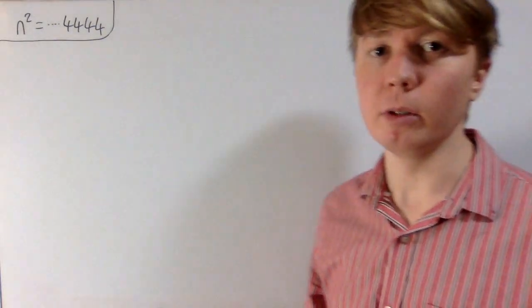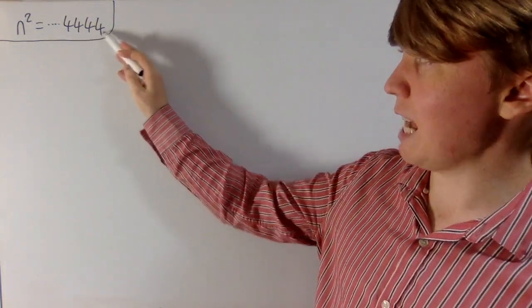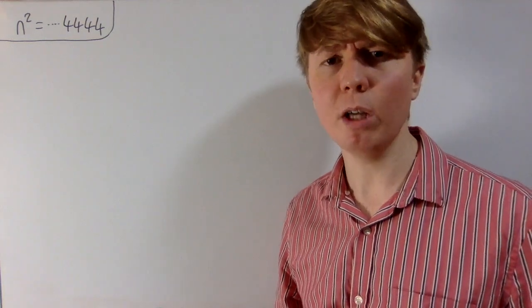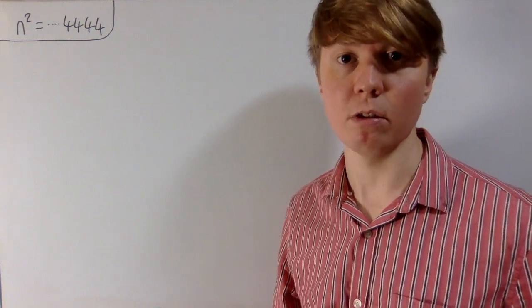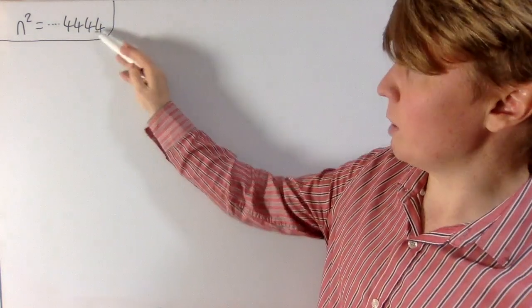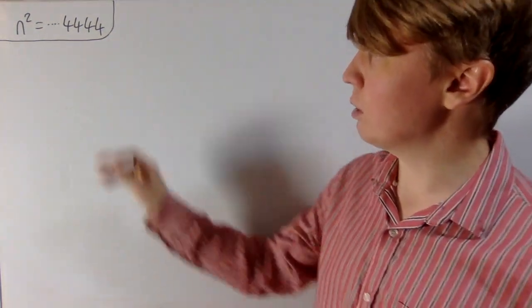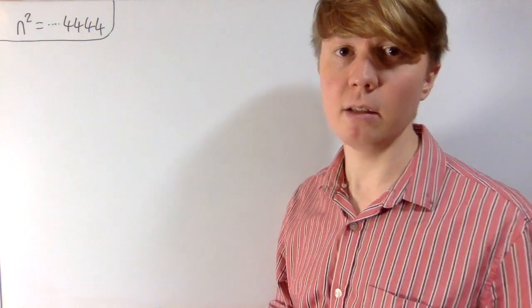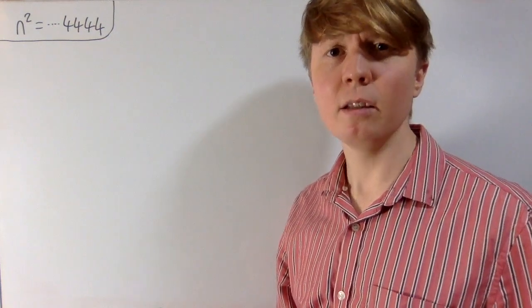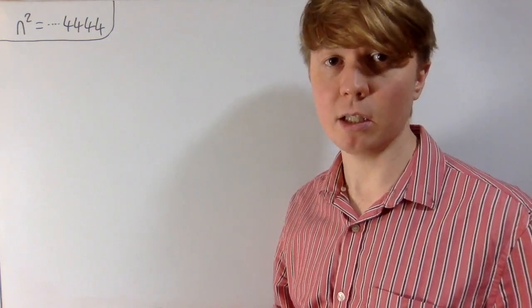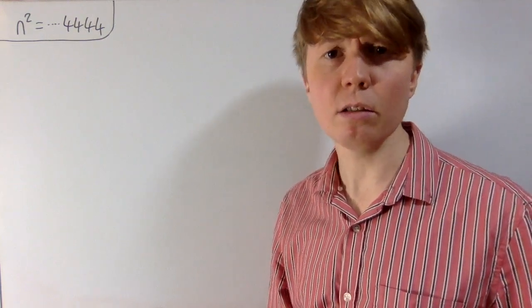Let's check whether a square number ending in four 4s is actually possible. We've only tested the tens and units columns so far. Looking at the hundreds column modulo 8 — since 1000 is a multiple of 8 — we get 444, which has remainder 4 when divided by 8. A square number can have remainder 0, 1, or 4 mod 8, so this doesn't cause any problems.